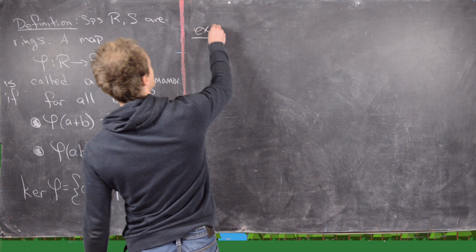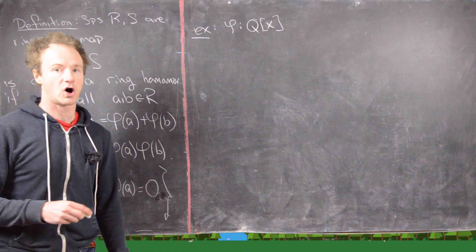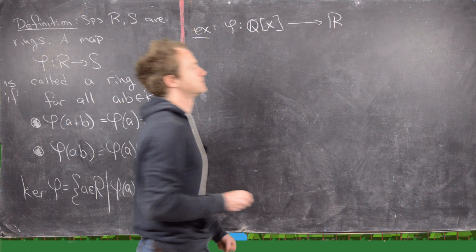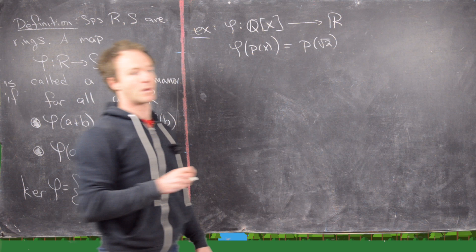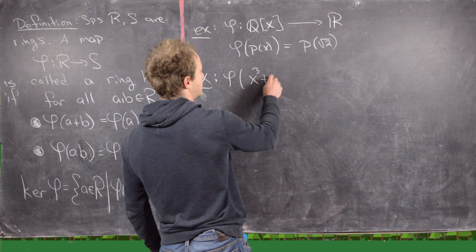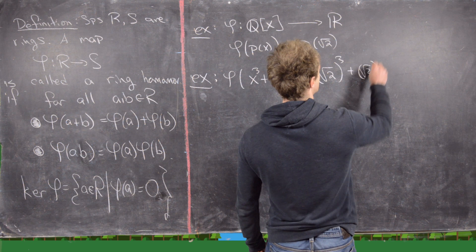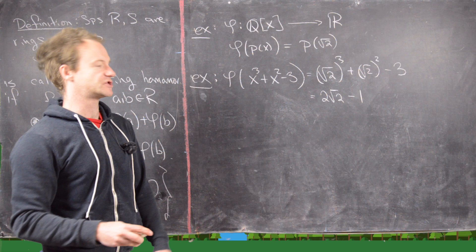The first example is φ from Q[X] — all polynomials whose coefficients are rational numbers — to R, where we define φ evaluated at a polynomial P(X) as that polynomial evaluated at √2. For example, φ(X³ + X² − 3) gives us (√2)³ + (√2)² − 3, which is 2√2 + 2 − 3 = 2√2 − 1. So that's the image of this polynomial.